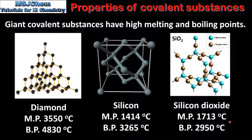To summarize, giant covalent structures tend to have high melting and high boiling points. This is because of the strong covalent bonds that exist between the atoms.